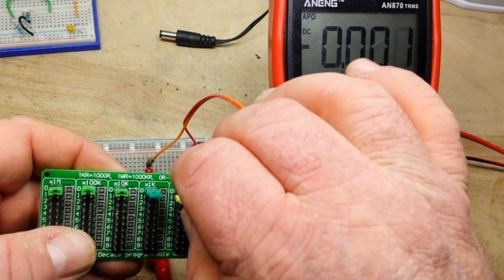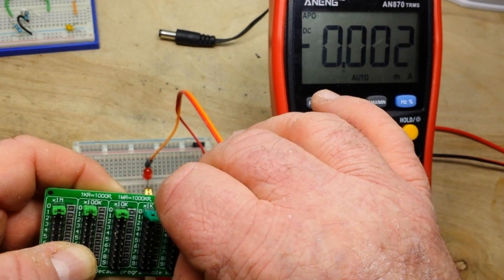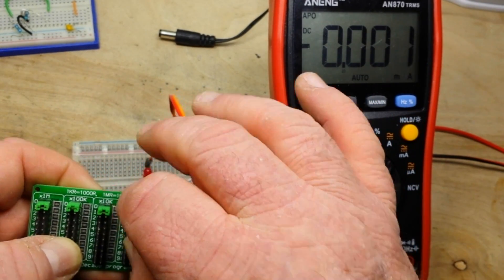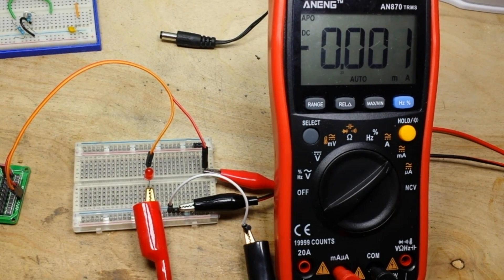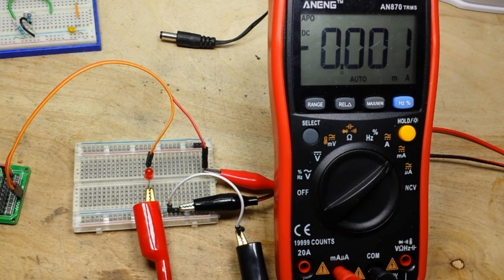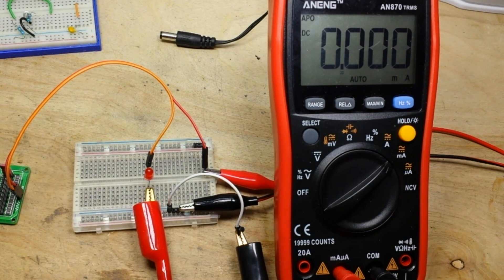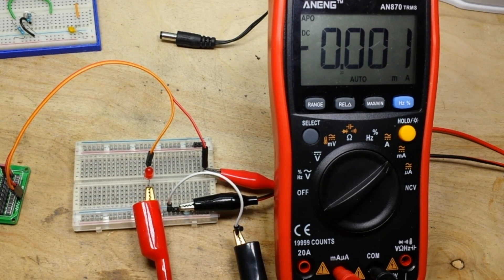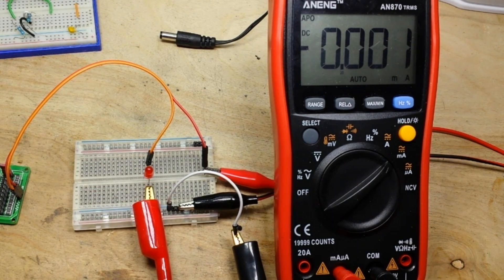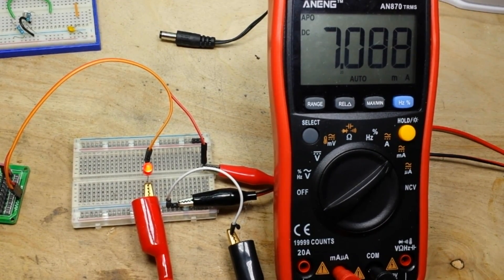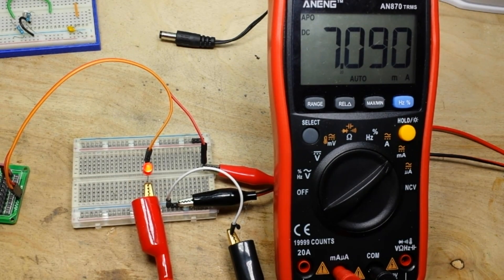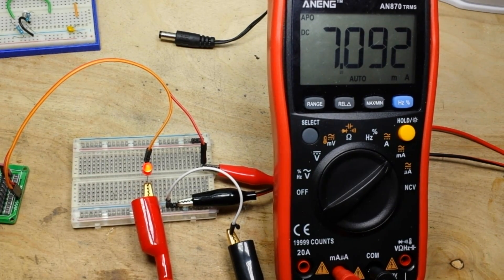And then once again, we're going to start with a kiloohm. We'll go back to our 9 volts. 9 volts, 1 kiloohm. We're at 7 milliamps, and that LED is plenty bright.